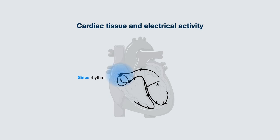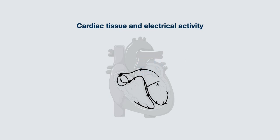However, this is not always the case. Sometimes the electrical activity can be initiated from another region in the atria, known as an atrial rhythm. It can originate from the junction, known as a junctional rhythm, or it can originate from the ventricles, known as a ventricular rhythm.